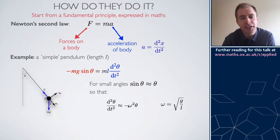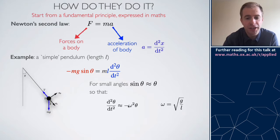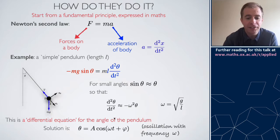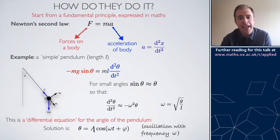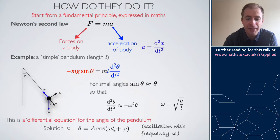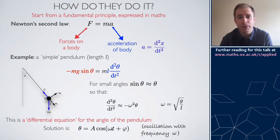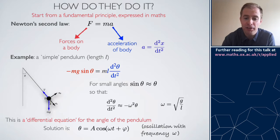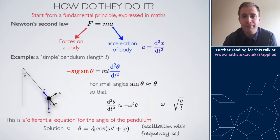You may recognise this as the equation for simple harmonic motion. The solution of this differential equation is that theta equals some amplitude A times cos of omega t plus some phase phi. As time increases, the argument of the cosine increases, and since cosine is an oscillatory function, you expect theta to oscillate backwards and forwards — just as you'd expect a pendulum to.